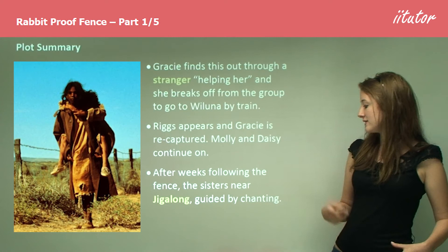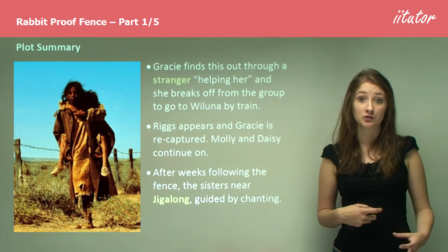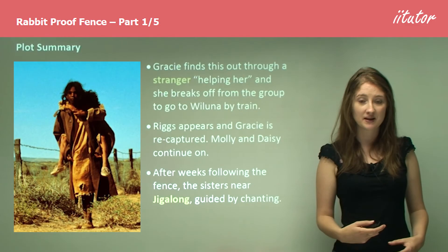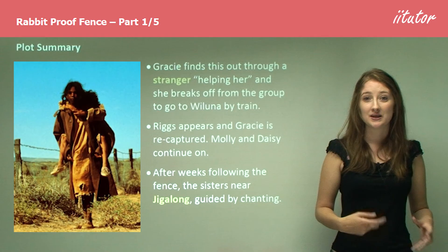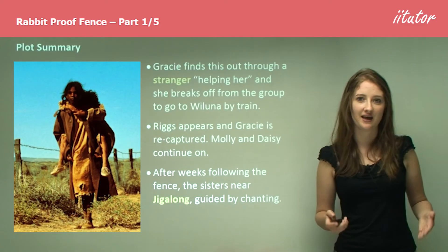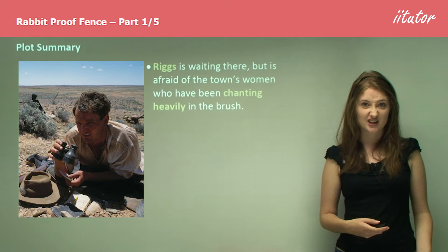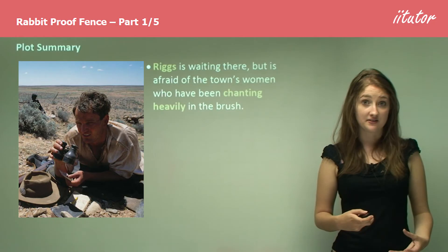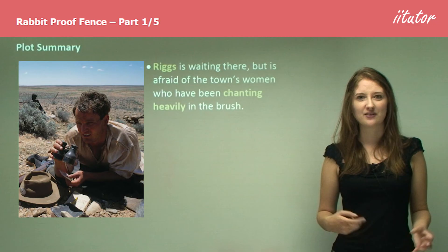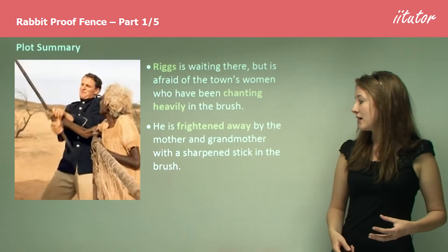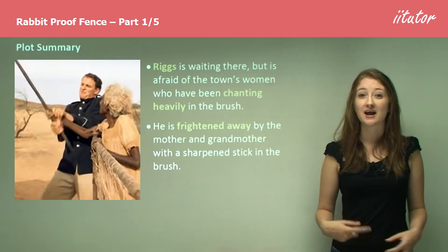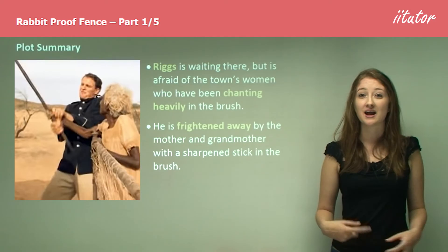After weeks following the fence, the sisters near Jigalong and are basically guided by chanting. This is really linked to Aboriginal spirituality — the idea that a connection to Aboriginal religion, the land, and the Dreaming is inherently linked to every Aboriginal soul, helping them get home. Unfortunately Riggs is waiting at the town, however he's afraid of the town women who have been chanting heavily in the brush. He's terrified by this Aboriginal ritual he doesn't understand, and is frightened away by the mother and grandmother who appear with a sharpened stick out of the brush, giving us a resolution.